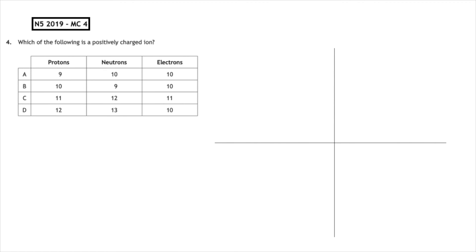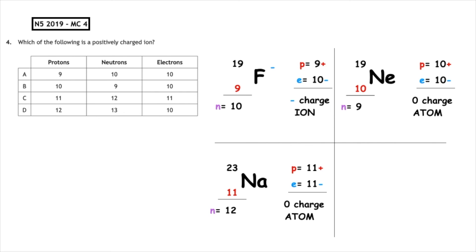Now we're going to do past paper questions from the National 5 2019 multiple choice. Which of the following is a positively charged ion? So what I would do for this is I would do the table that we've practiced throughout this video and place the protons, electrons, and neutrons and write the overall nuclide notation for each example. And once we've done that, we can see that the only one which is a positive ion, meaning it's got more protons than electrons, is Dm2+.